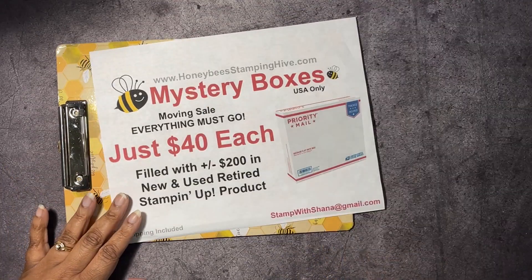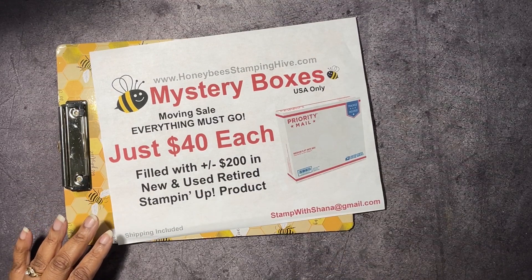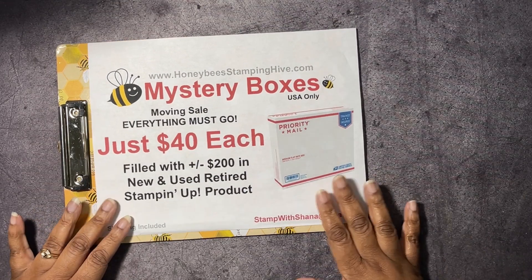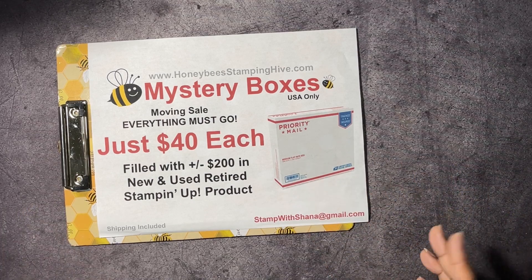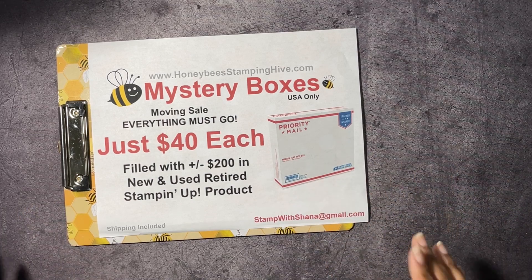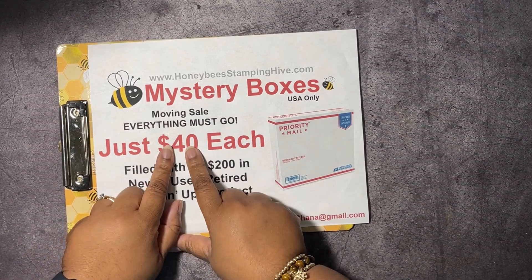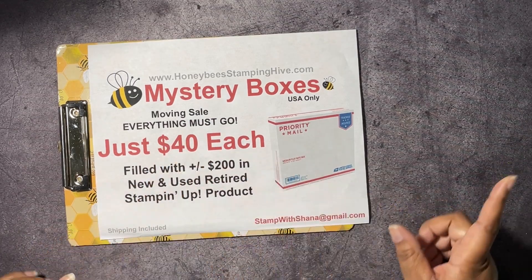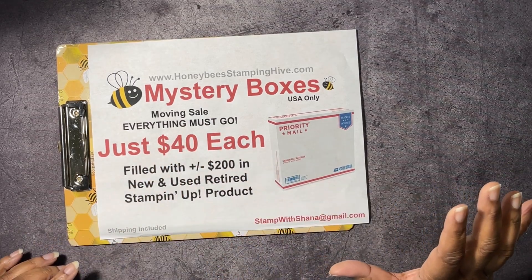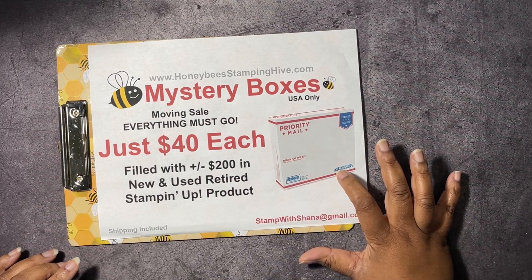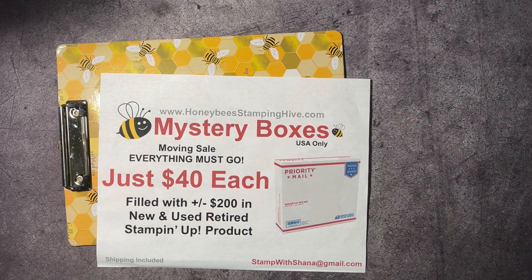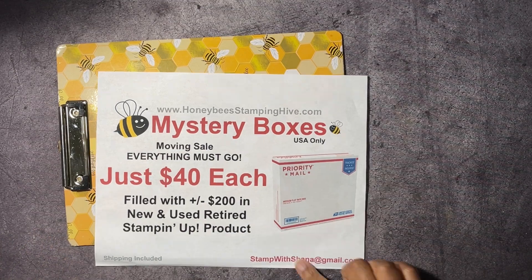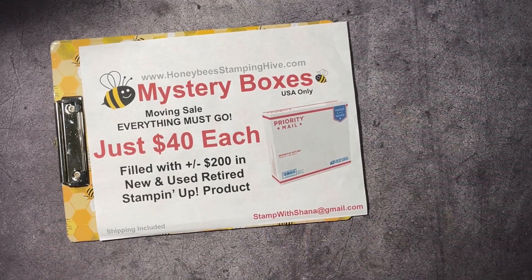We also have our mystery boxes back. If you would like to get one, they're $40 each and they're filled with about $200 worth of new and used retired Stampin' Up product. I can only ship in the US and shipping is included in this $40 price. This is a medium flat rate box from the USPS and I will ship this out to you directly. If you would like one, just email me at stampwithshana at gmail.com.